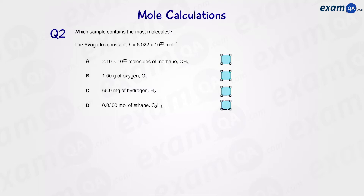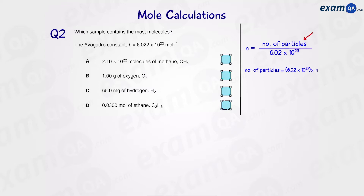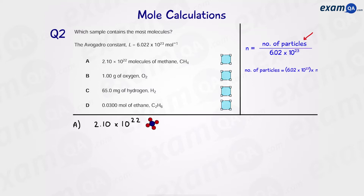Question two: which sample contains the most molecules? We're trying to work out number of particles, so we're going to use our number of particles equation. Molecules is a type of particle, so we're going to rearrange it such that number of particles equals Avogadro's constant times by number of moles. Starting with A — in this one, we've already been given the number of molecules, so we can move on to the next one.